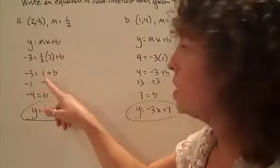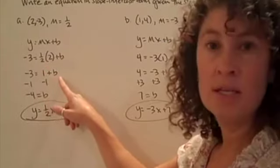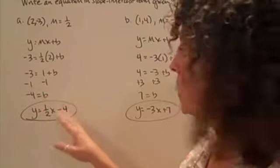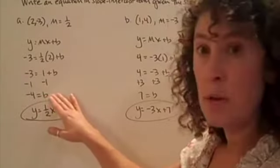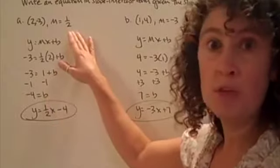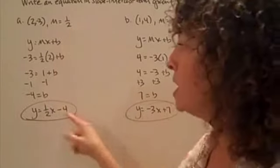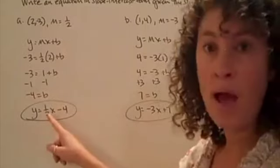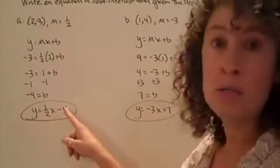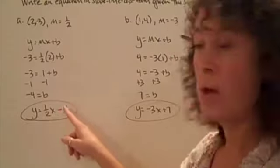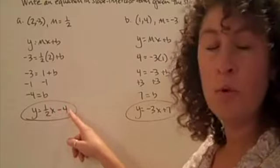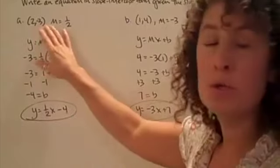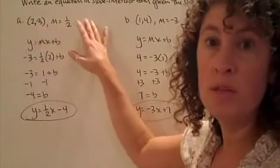I'm going to do my math here. I'm going to do one-half times two and get one. I'm going to isolate that variable b by subtracting one on both sides. I get negative four equals b. So I have my y-intercept. I have my slope. So I can plug those into my slope-intercept form. y equals one-half x minus four.